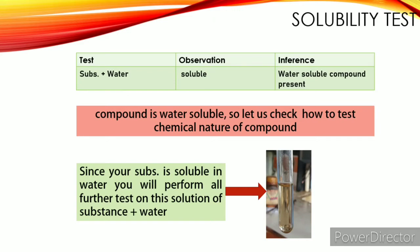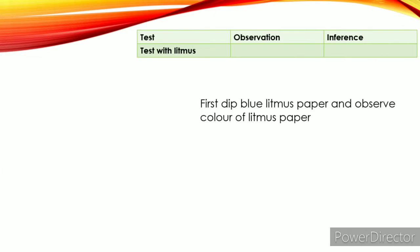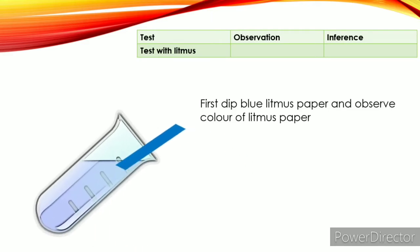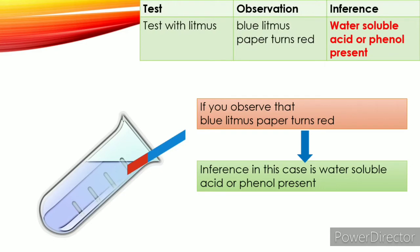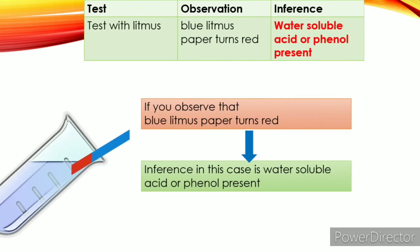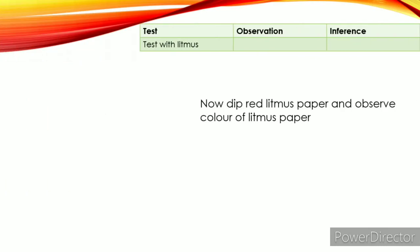So first you have to test this solution with litmus paper. First take blue litmus paper and dip into solution. If blue litmus turns red, you will say that given substance is water soluble acid or phenol.